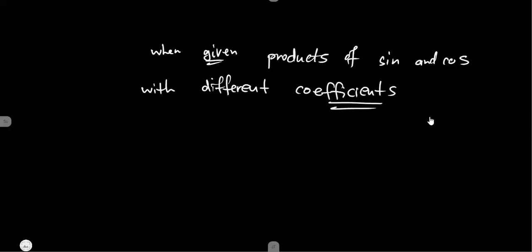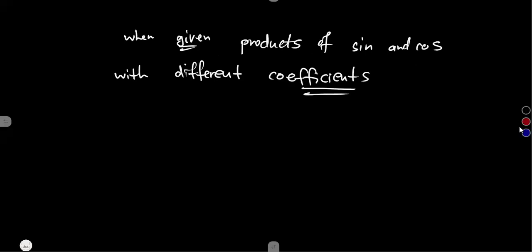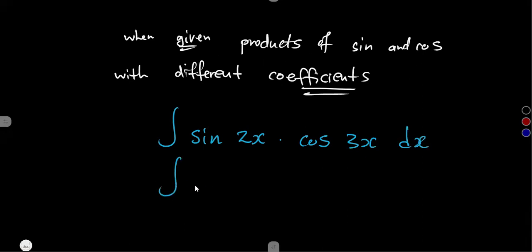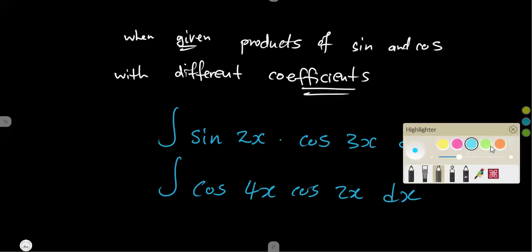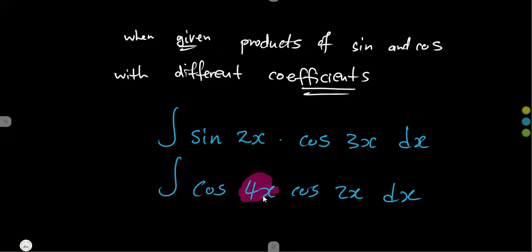When I refer to different coefficients of sine and cosine, for example, we might be given the integral of sine(2x) times cosine(3x) with respect to x. Or it can be cosine times cosine, or sine times sine, as long as the coefficients are different — like 4x and 2x, or 2x and 3x. Any of that nature counts.